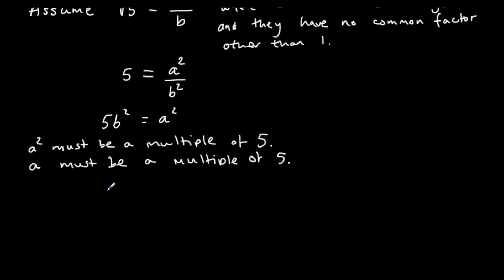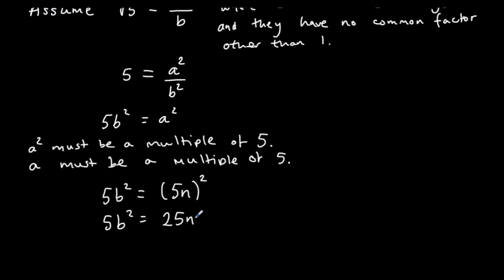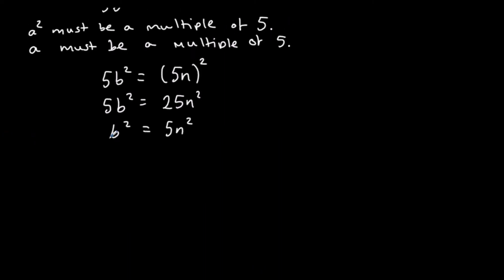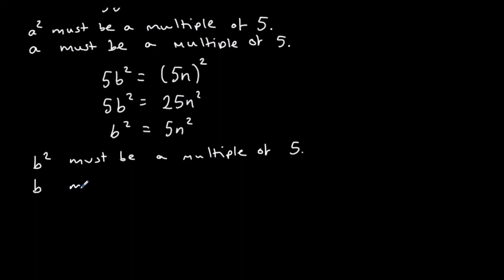Since A is a multiple of five, I'll rewrite A as five N. So five B squared equals (five N) squared, which gives 25N squared. Dividing both sides by five: B squared equals five N squared. That tells me B squared must be a multiple of five. If five is a prime factor of B squared, it must also be a prime factor of B, so B must also be a multiple of five.